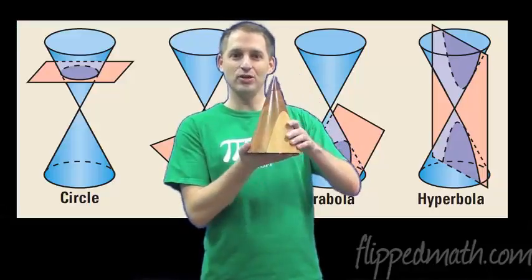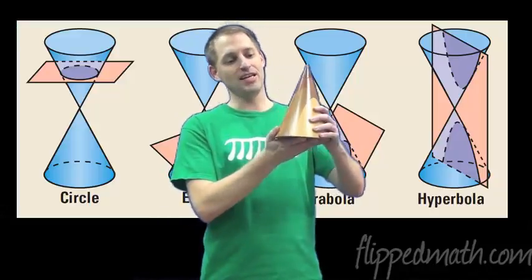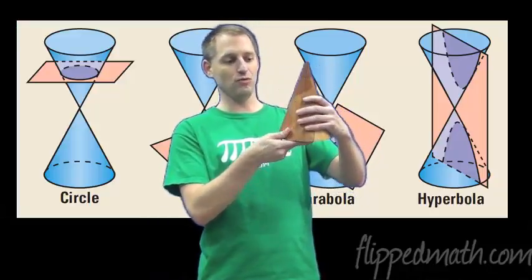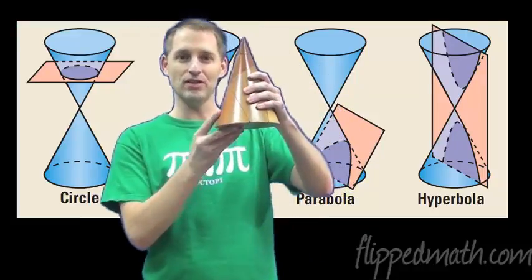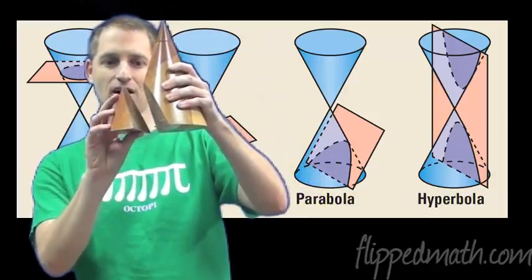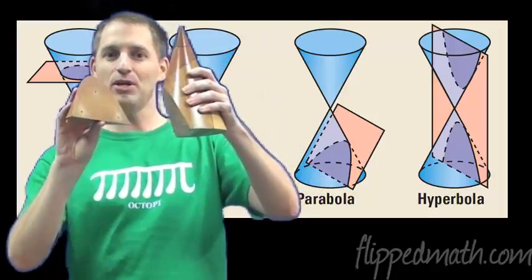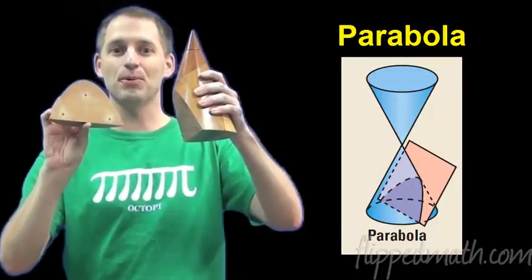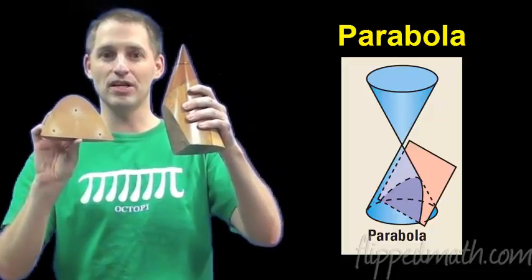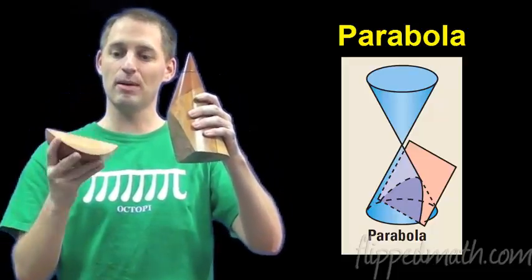What in the world is a conic section? A conic section is when you have a cone and you slice it at any particular angle. For example, when we take this cone and slice it at an angle like this, the shape that it creates is a parabola.